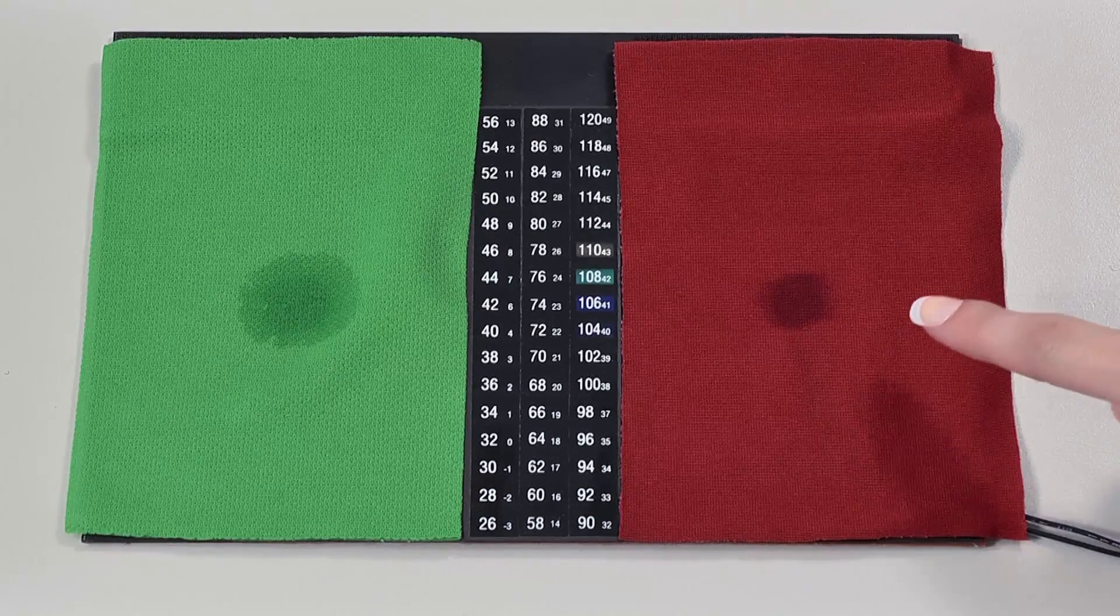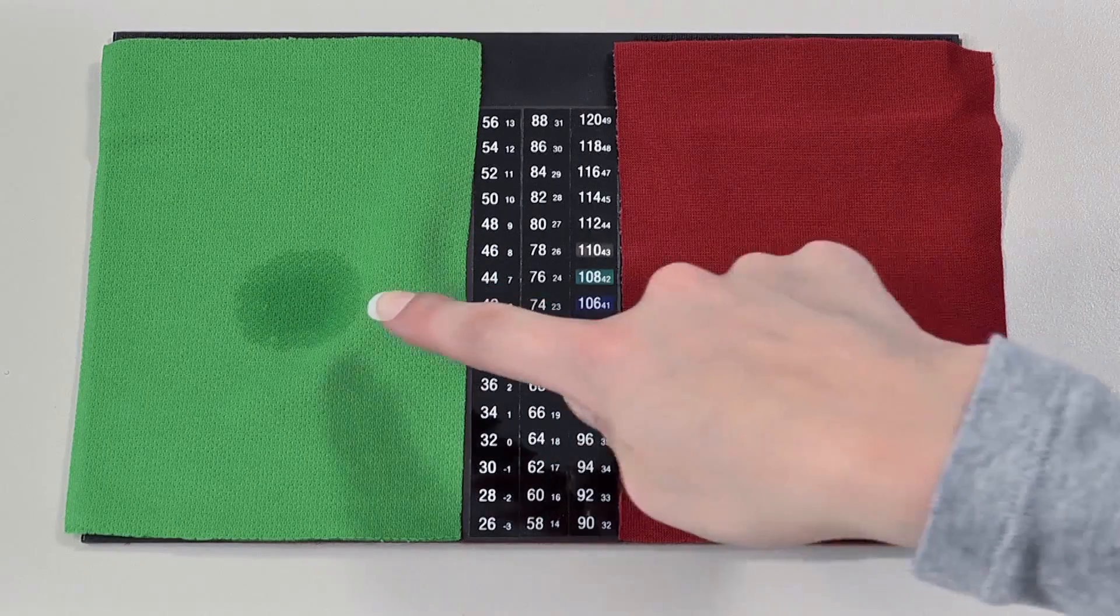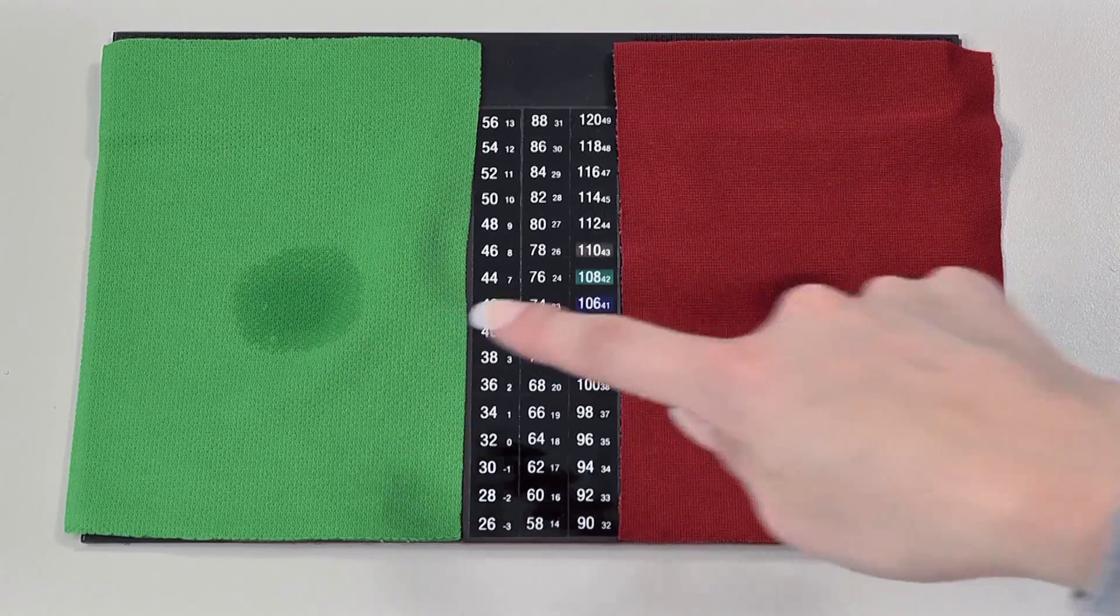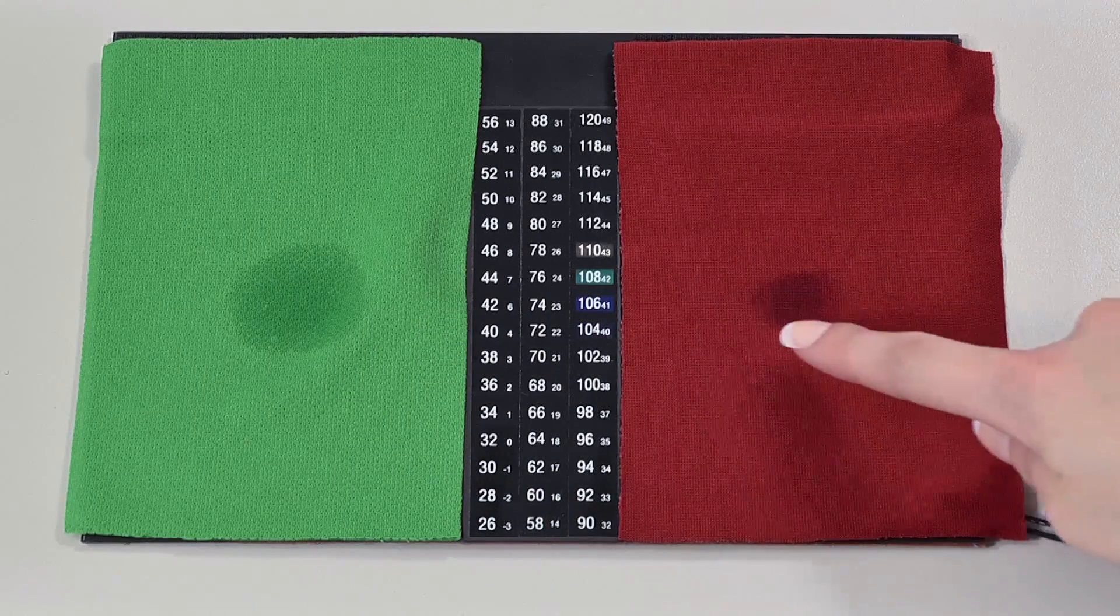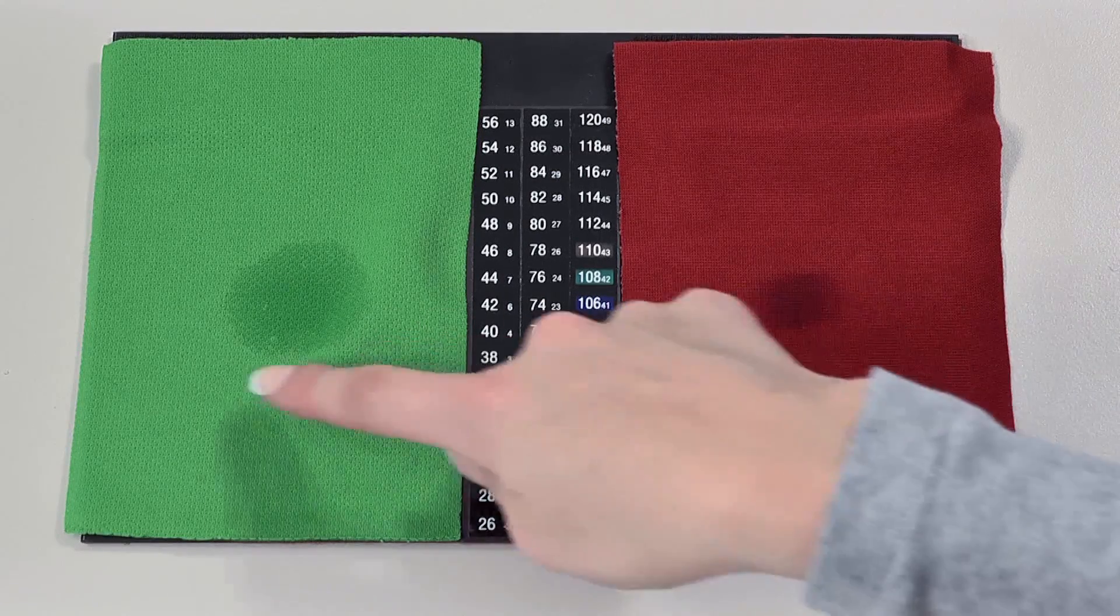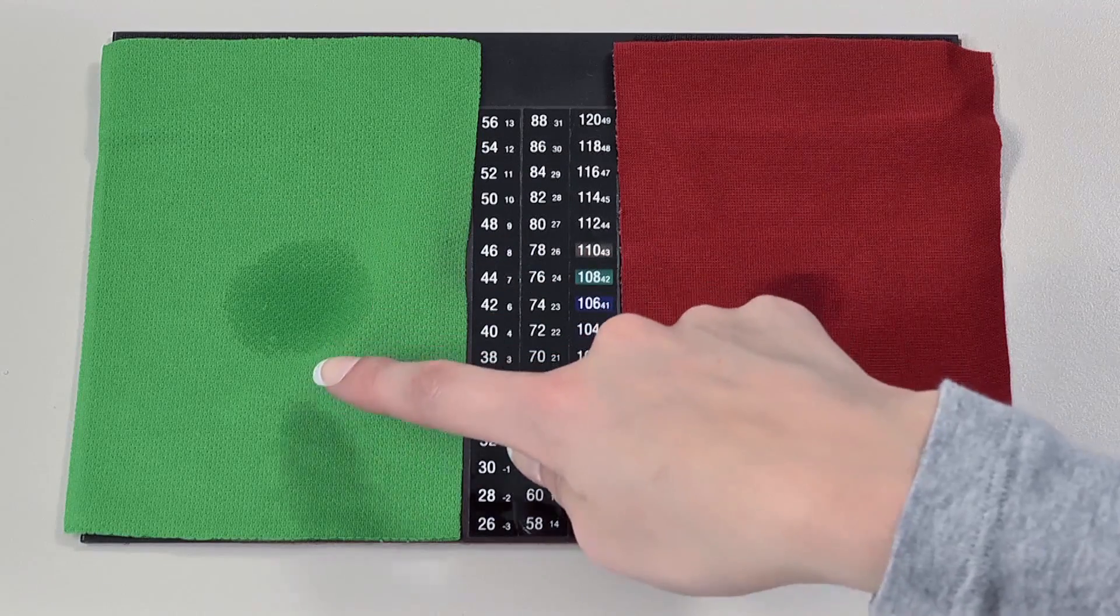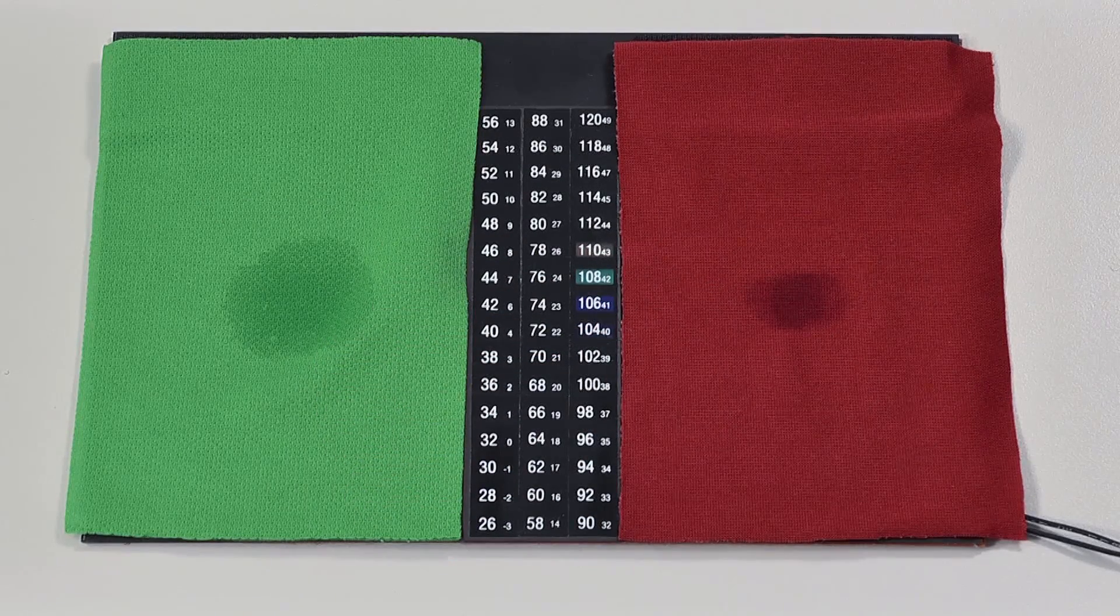when moisture comes into contact with the fabrics, it behaves very differently. Because of its unique pore structure, the moisture spreads across the Kokona fabric much further, therefore drying much faster.